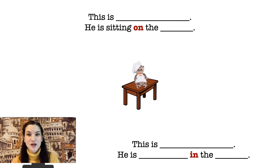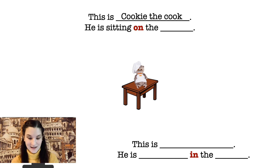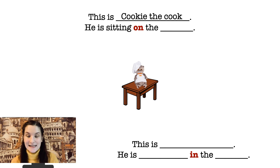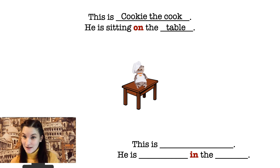Look at the picture! Who can you see in the picture? This is Cookie the cook — you know this cat very well. And he is sitting on the table. Very nice! Pause the video and read the sentence yourself. And let's try to discuss the second cat.